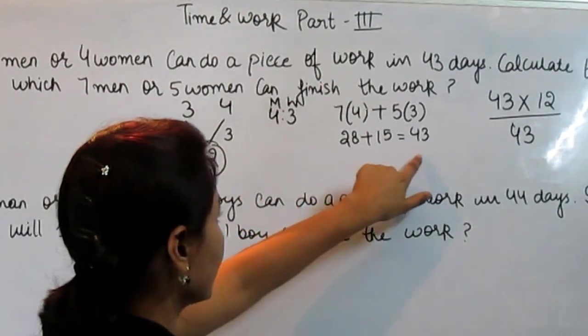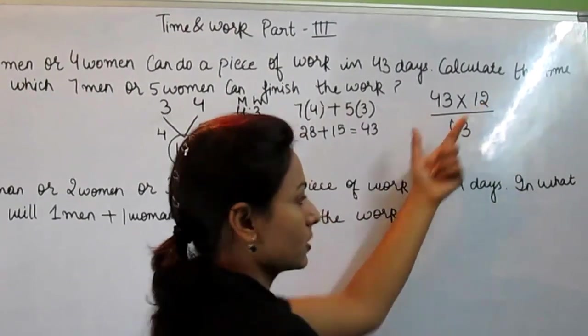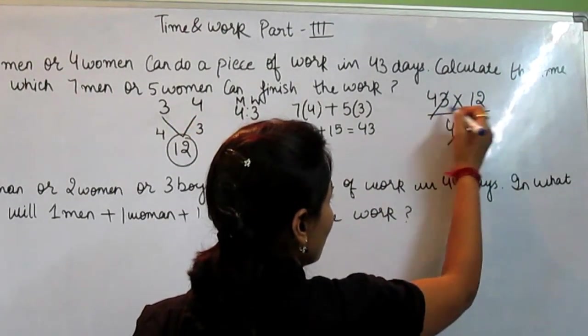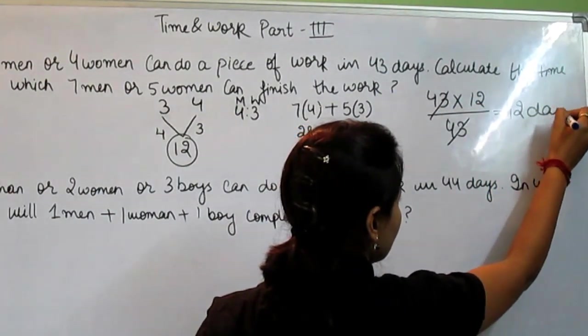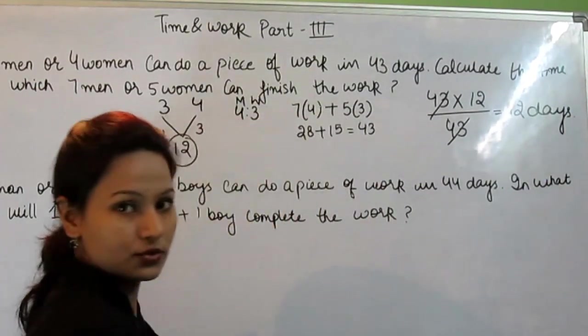Because we have to calculate that time when 7 men or 5 women can finish the work. When we solve, we get 12, and 12 is the answer.